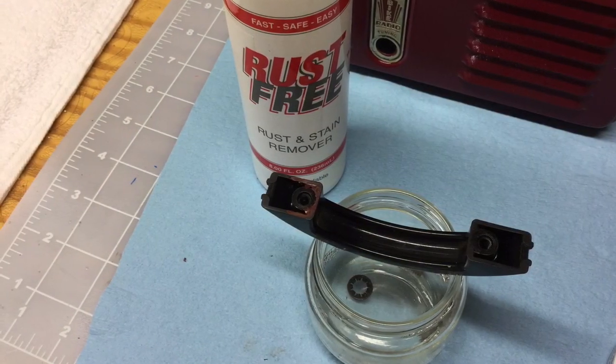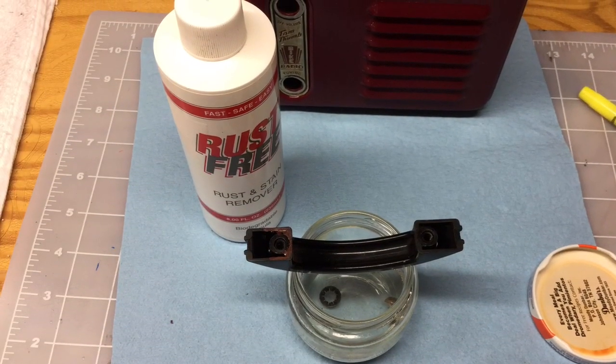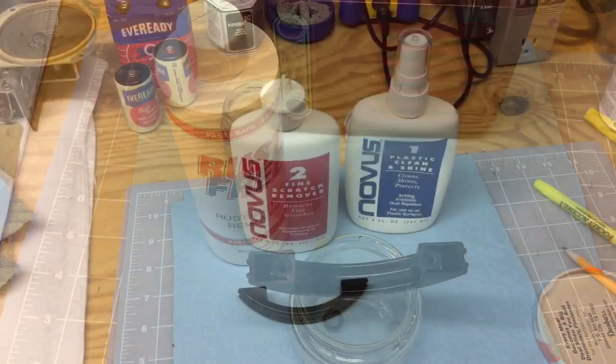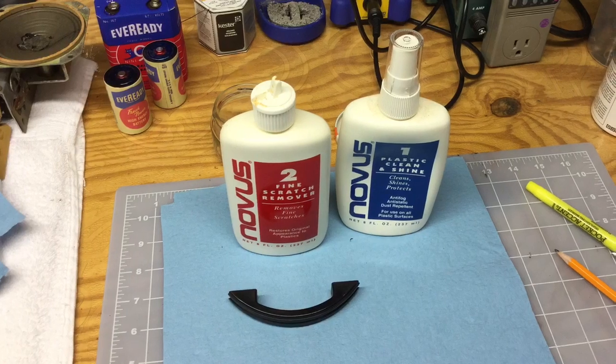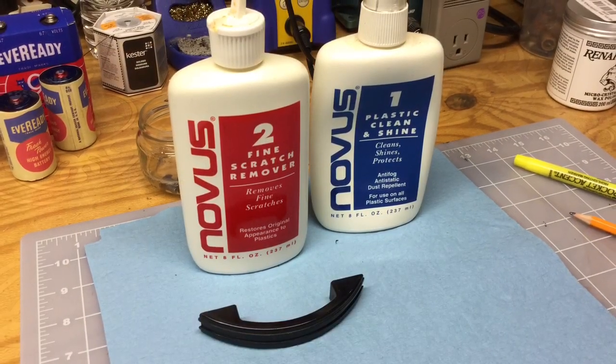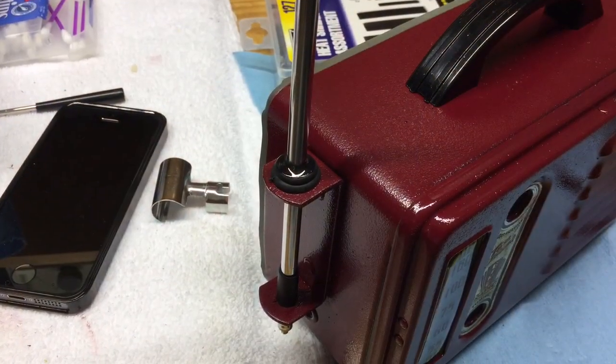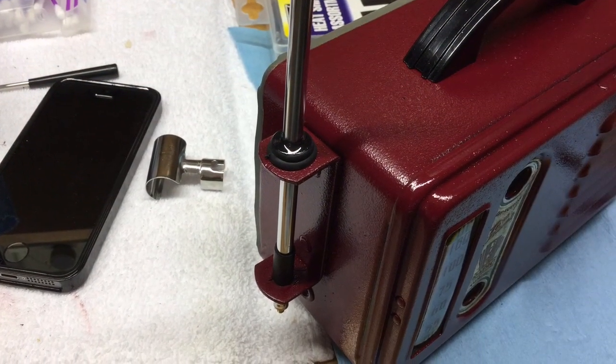Here again I'm spending some time cleaning up that Bakelite handle as well as doing the de-rusting of the screws that actually attach the handle back to the top side of the cabinet. Then I'm using again my Novus polish number one and number two just to clean up that handle.